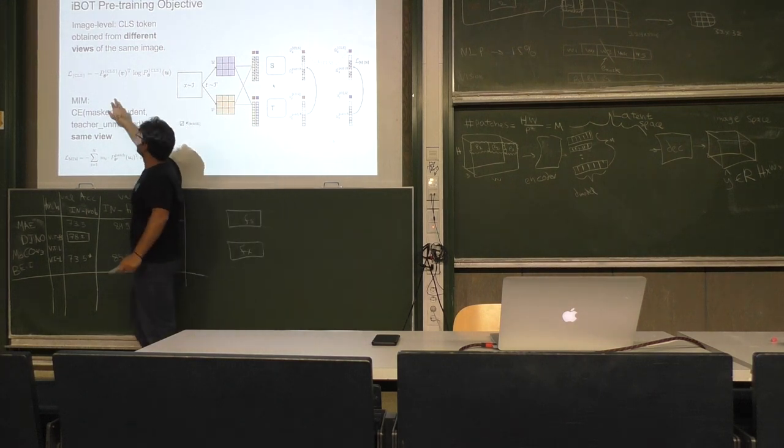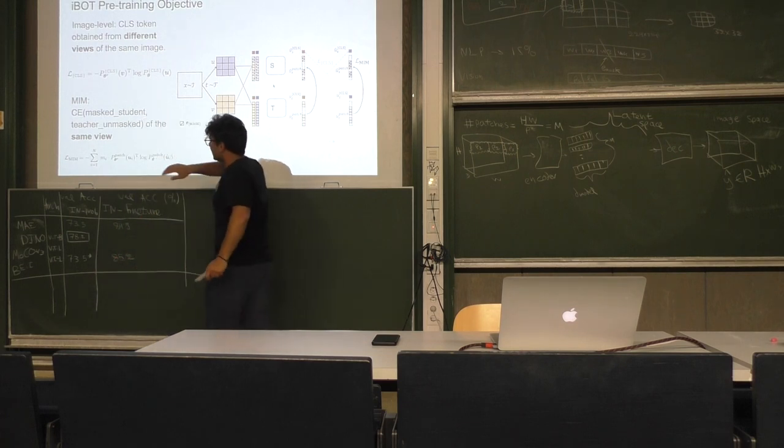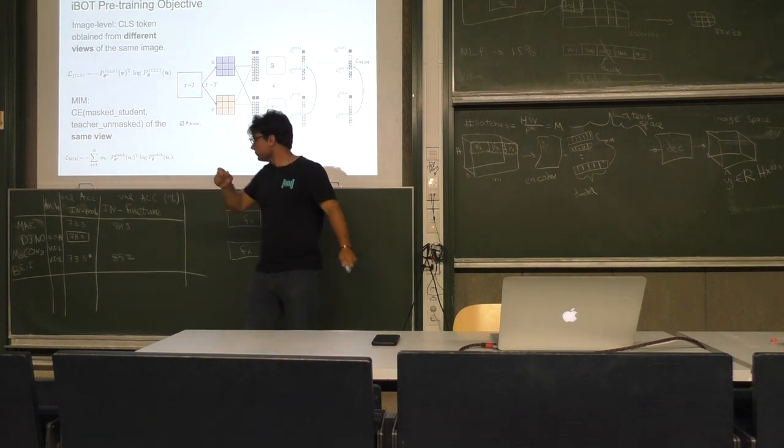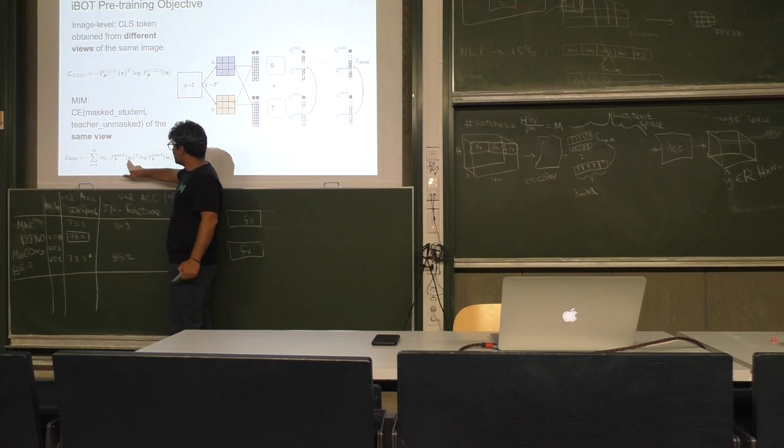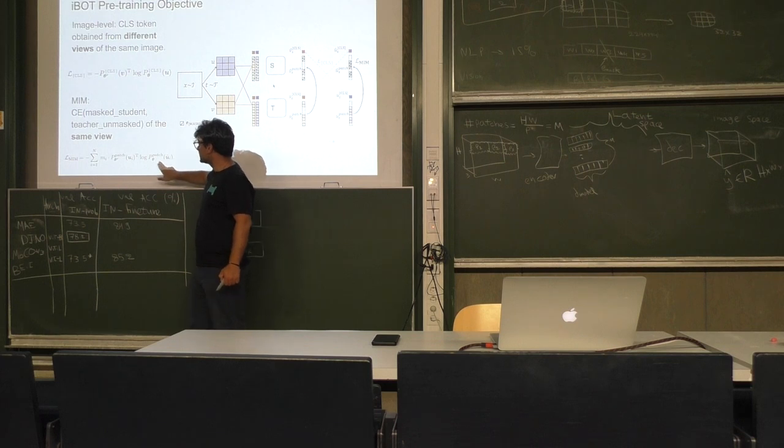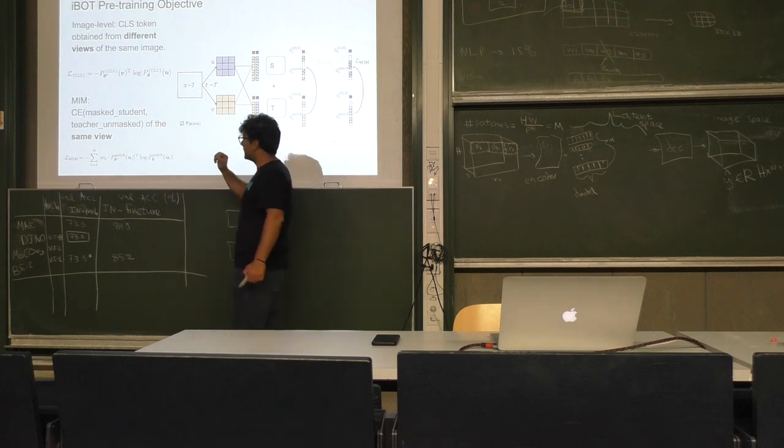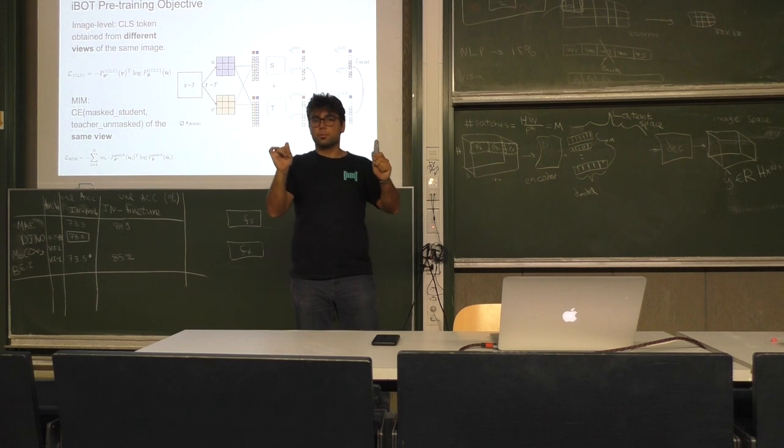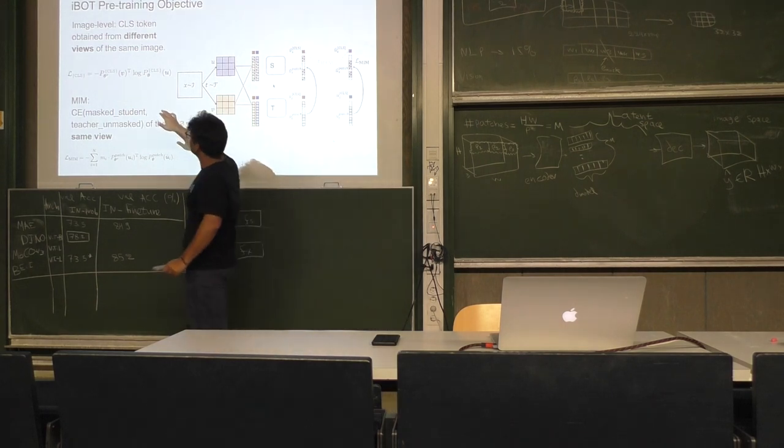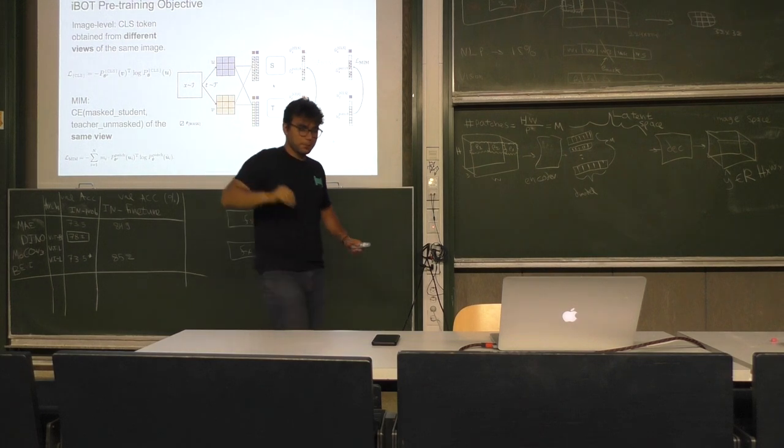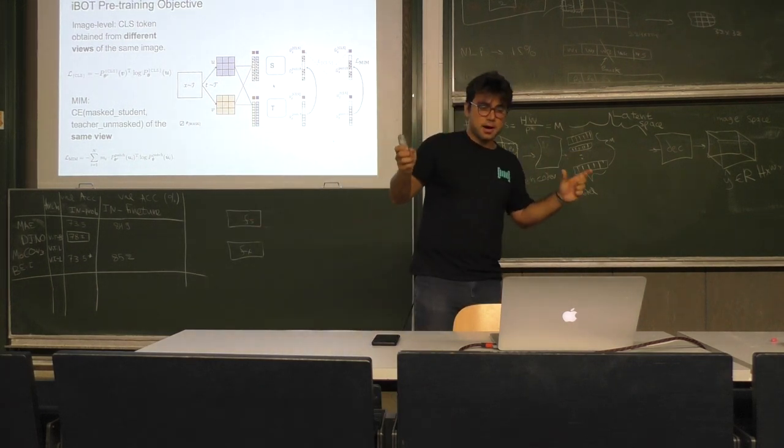Pay attention that we have U and V, two different views of the same image passed to different networks, then optimize the cross entropy. Here we have N patches, this sum is over the different patches, and M corresponds to which patches are masked. We have UI and UI hub, we try to match the masked and unmasked representations of the same view.